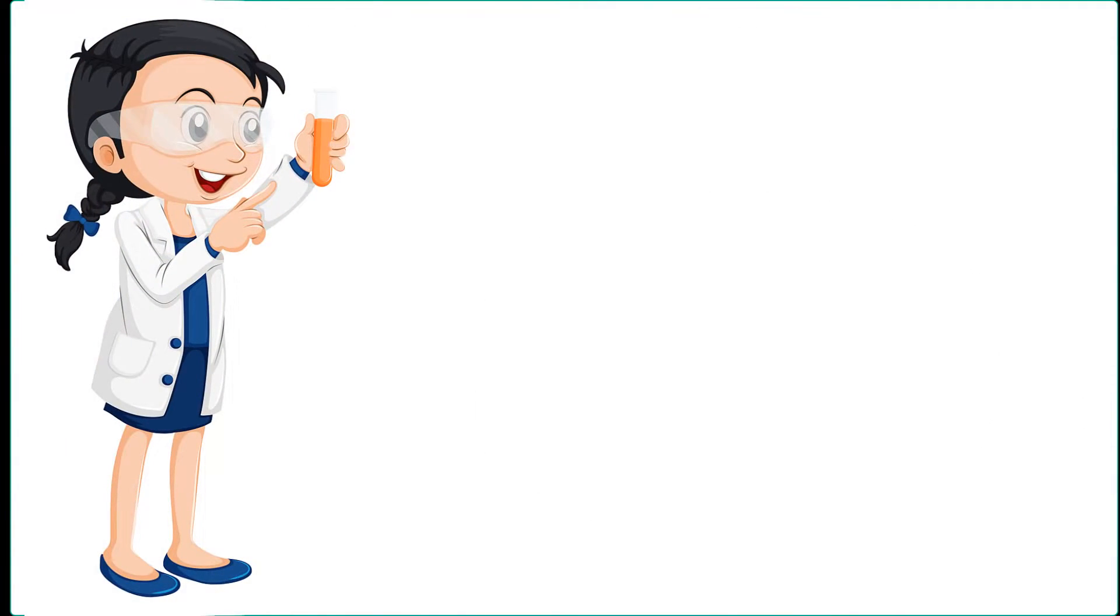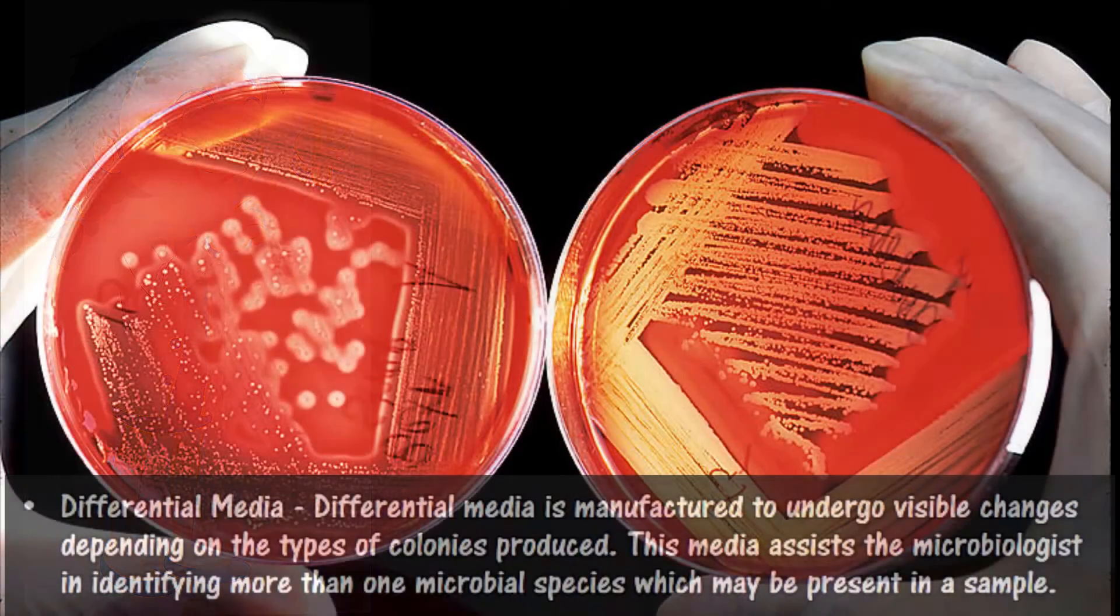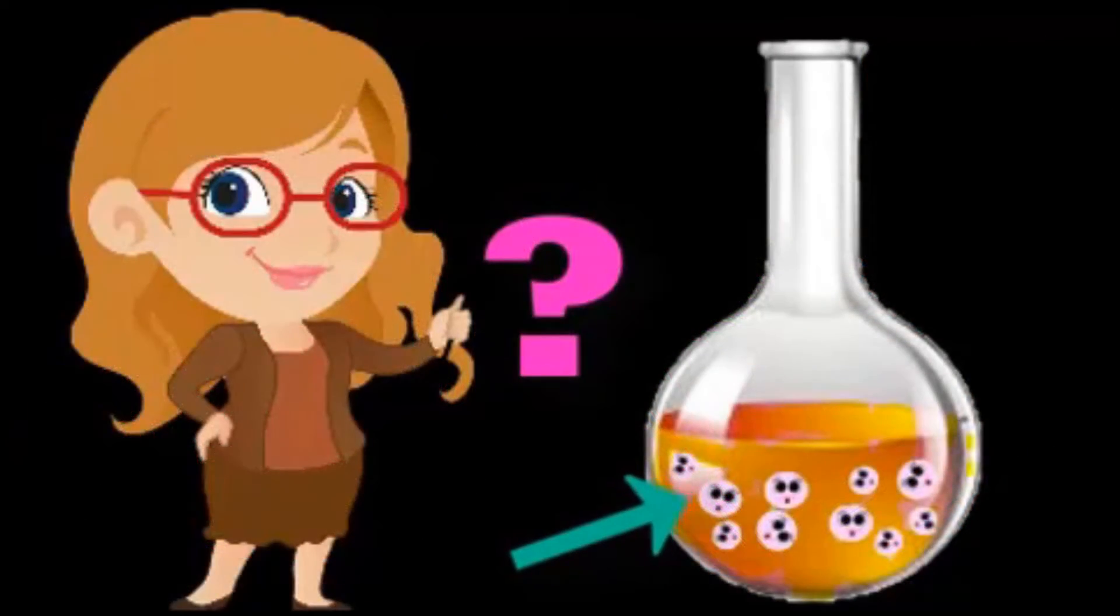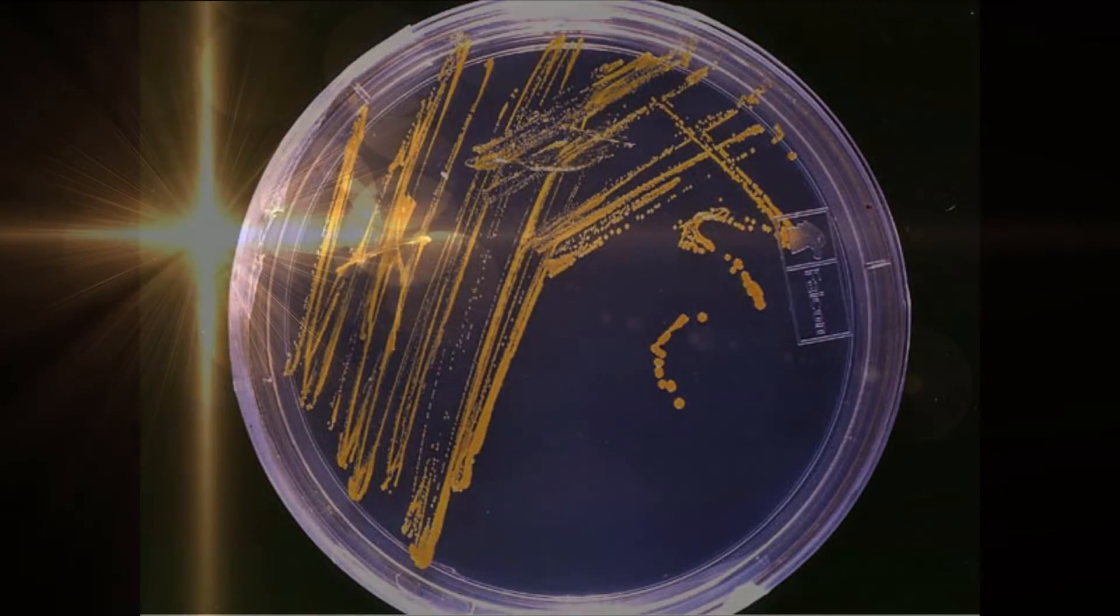Differential media is manufactured to undergo a visible change depending on the types of colonies that you produce. This media assists microbiologists in identifying microbial species which may be present in a sample.